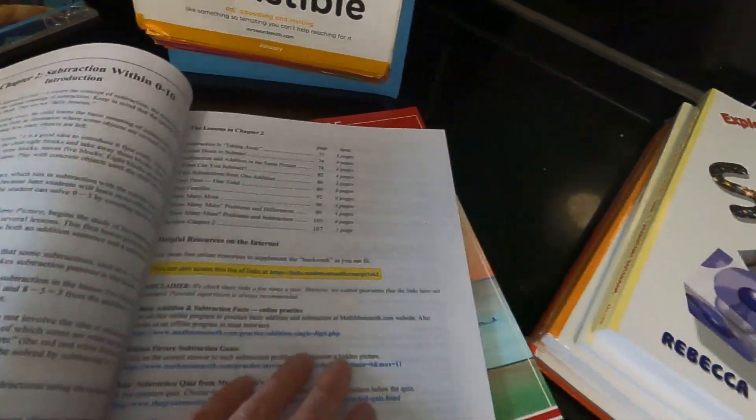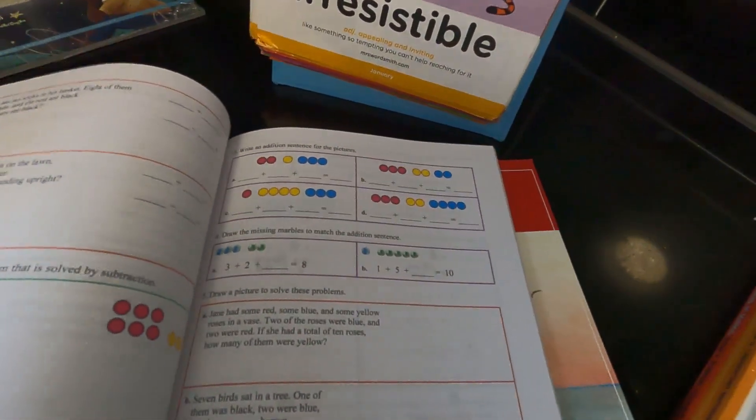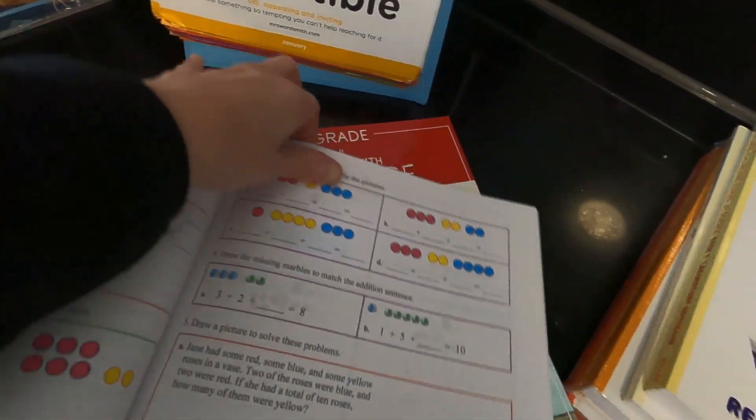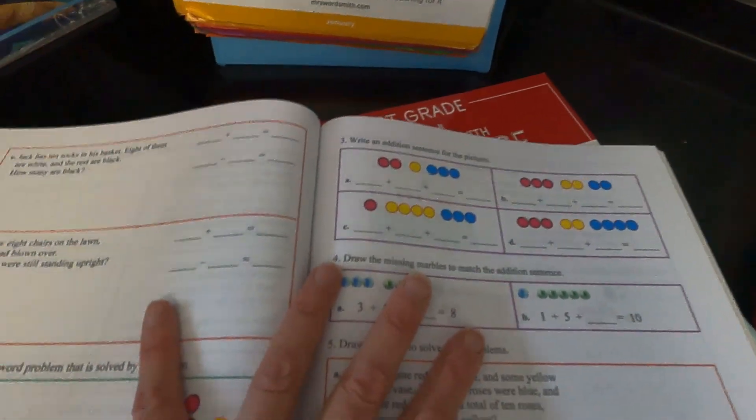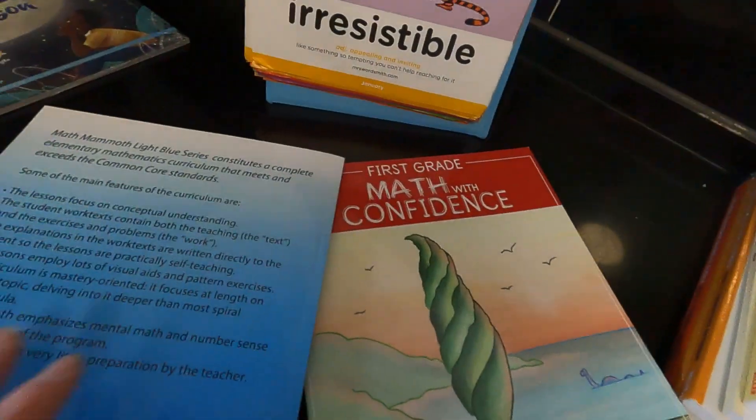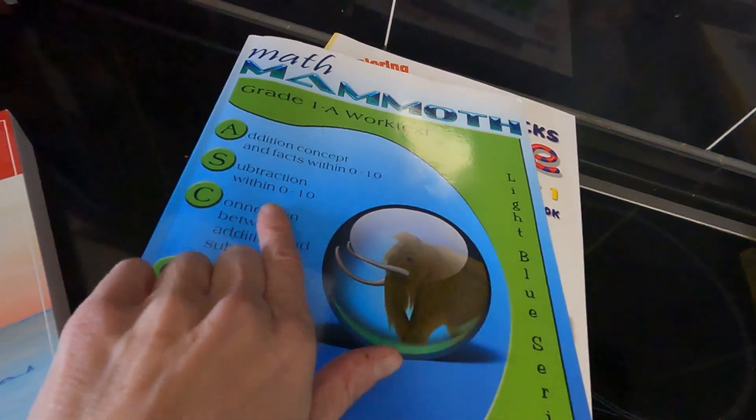So every day, part of his work, he would just get up and do a page a day. Now what I love about it is it is colorful. I mean, it is bright, it is colorful. It recommends you use an abacus with it, so we did buy an abacus when we were doing this, and then we switched from this to Math with Confidence.